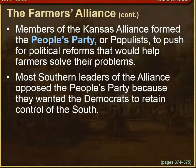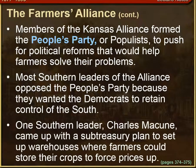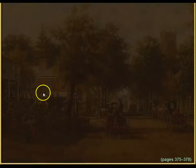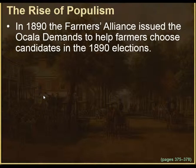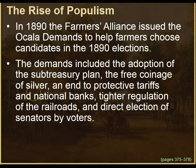Most Southern leaders of the Alliance opposed the People's Party because they wanted the Democrats to retain control of the South. One Southern leader, Charles McCune, came up with a sub-treasury plan to set up warehouses where farmers could store their crops to force prices up. In 1890, the Farmers' Alliance issued the Ocala demands to help farmers choose candidates in the 1890 elections. These demands included adoption of the sub-treasury plan, the free coinage of silver, an end to protective tariffs and national banks, tighter regulation of the railroads, and direct election of senators by voters.